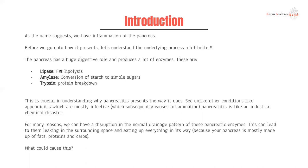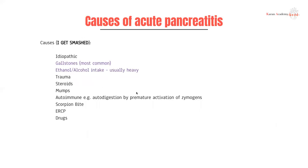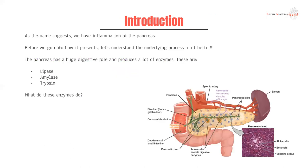Going back to our enzymes — lipase breaks down fat, amylase breaks down starch, and trypsin breaks down protein. Your pancreas is mostly made up of these things. So if you have a situation where these enzymes are released and activated in the pancreas, you're going to get destruction and inflammation. What causes acute pancreatitis? The mnemonic commonly used is 'I GET SMASHED.' The most common cause is gallstones. If you have a gallstone blocking the common bile duct, you're going to have retrograde flow of bile up the bile duct as well as through the pancreatic duct. The enzymes can't go anywhere and start leaking into the surrounding space, leading to pancreatitis.